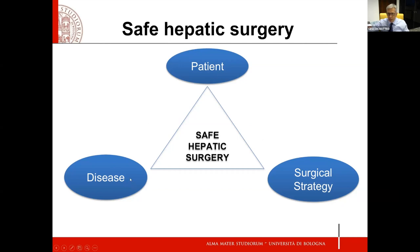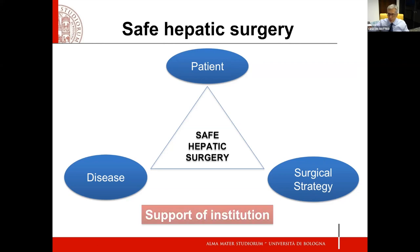Il concetto di chirurgia epatica sicura ha diversi aspetti: da una parte abbiamo la presenza e il grado di epatopatia, le caratteristiche del paziente, a cominciare da quelle anagrafiche fino alla presenza di comorbidità o di particolari fragilità, e la strategia chirurgica con i suoi aspetti tecnici e di adeguatezza perioperatoria. Certamente il supporto dell'istituzione, e quindi dell'ambiente in cui si opera, è in tutto questo determinante, non fosse altro che per l'aspetto economico che richiede.